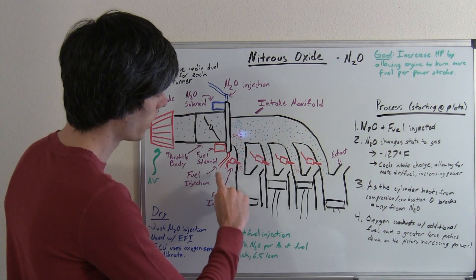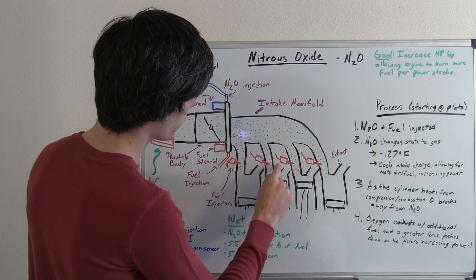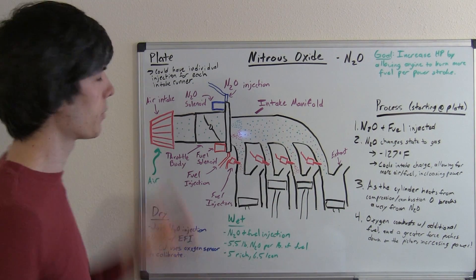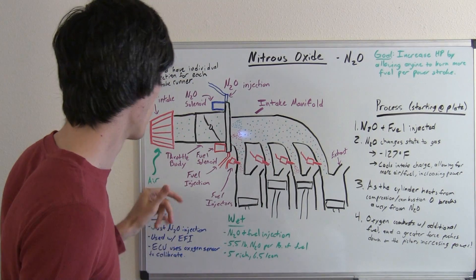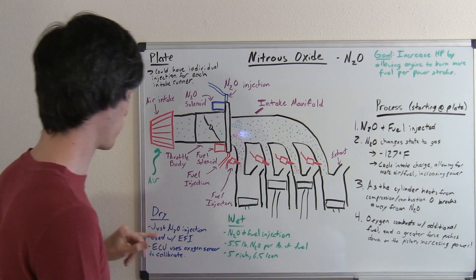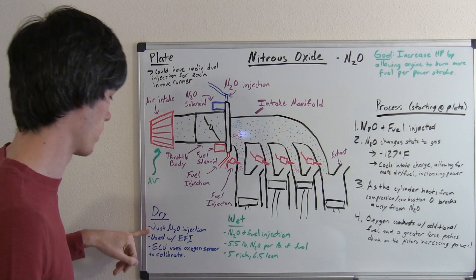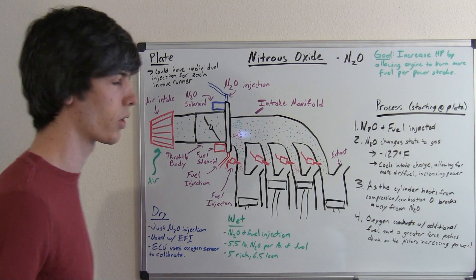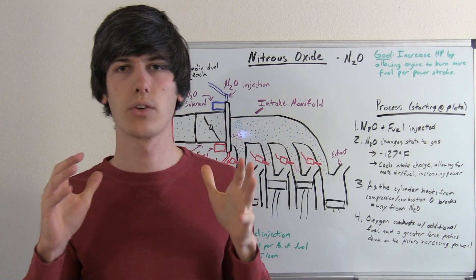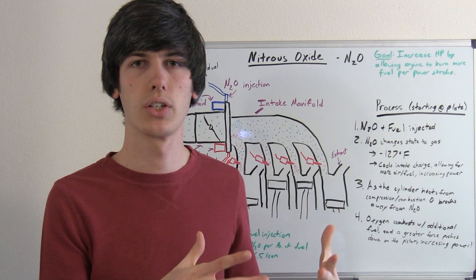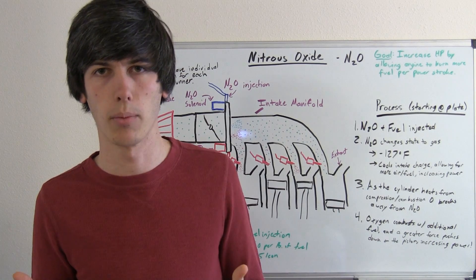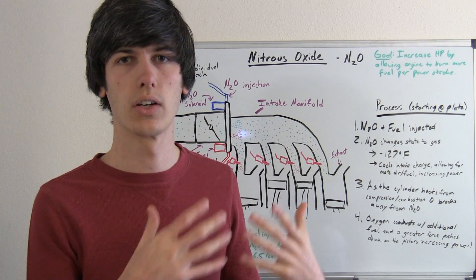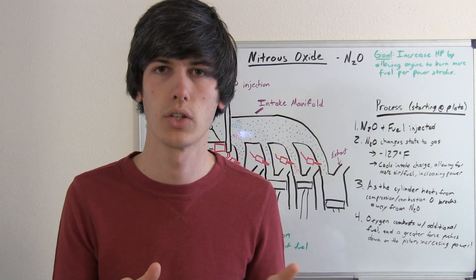So here we've got individual injectors as well. Now there's two types of nitrous systems, there's dry systems and there are wet systems. Now a dry system is going to be just nitrous injection and it's going to have to be used with electronic fuel injection because as you're injecting the nitrous you're going to have more oxygen in your cylinders. Now you'll have an overly lean mixture so obviously you need to burn more fuel. So your ECU is going to tell your fuel injectors, hey you need to inject more fuel.